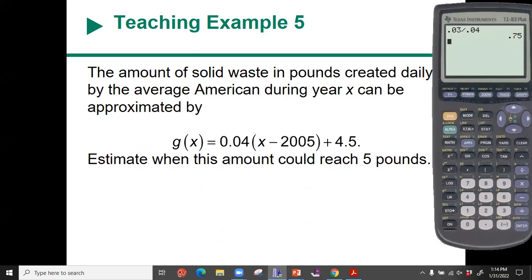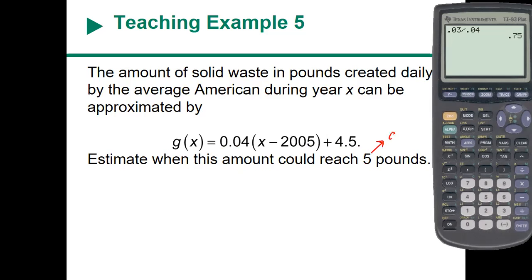We're looking for when g(x) will equal 5. This is our g(x), and x represents our years. So we substitute in, so we have 5 equals 0.04 times (x minus 2005) plus 4.5. I'm going to pause and let you quickly solve for x.